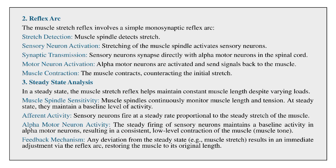The muscle stretch reflex involves a simple monosynaptic reflex arc: the muscle spindle detects stretch, activating sensory neurons. The sensory neuron synapses directly with alpha motor neurons in the spinal cord. Alpha motor neurons are activated and send signals back to the muscle, causing contraction that counteracts the initial stretch.